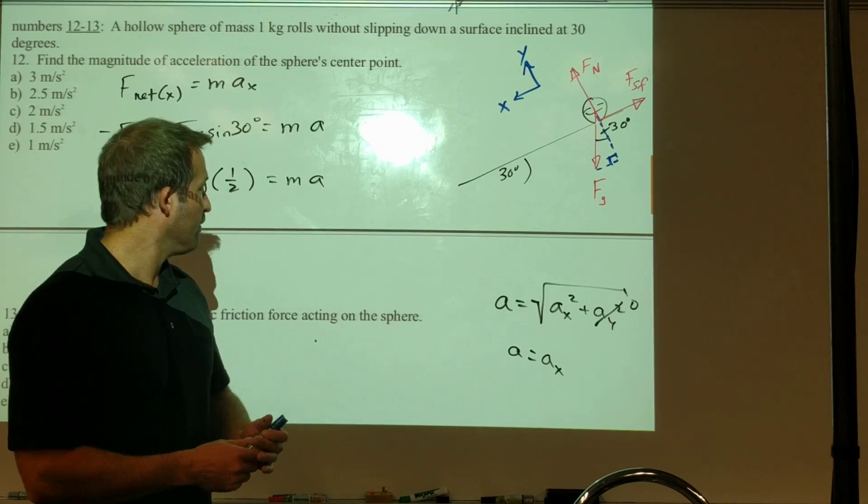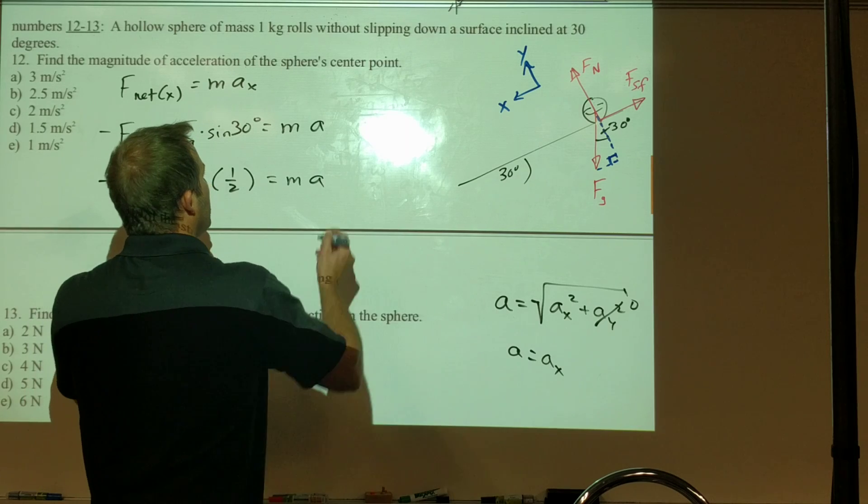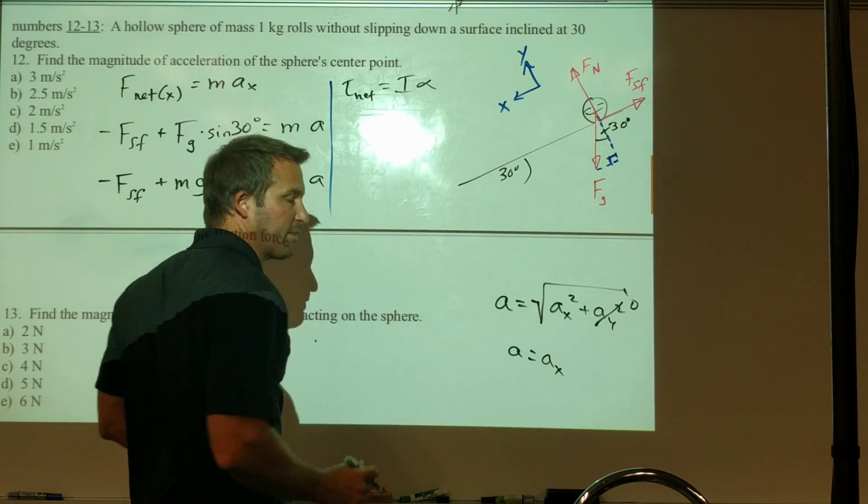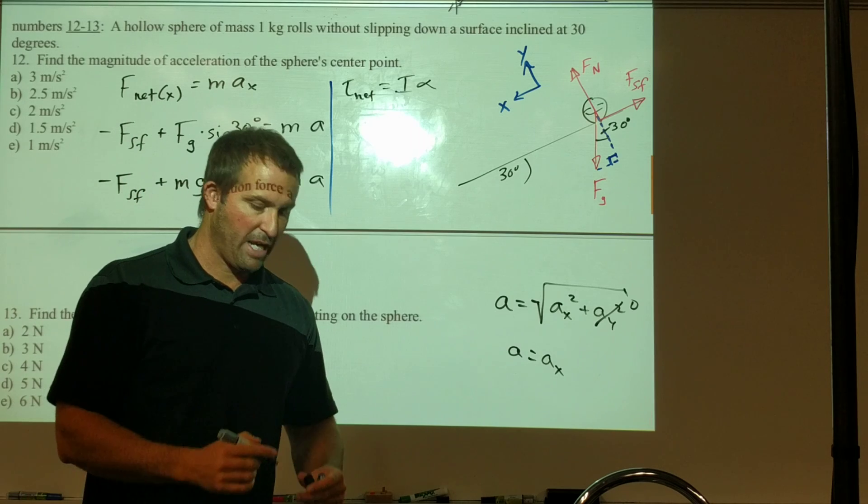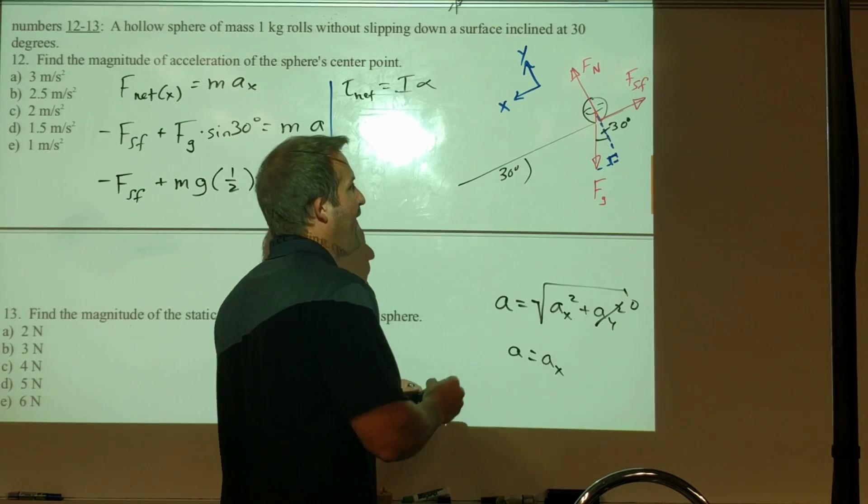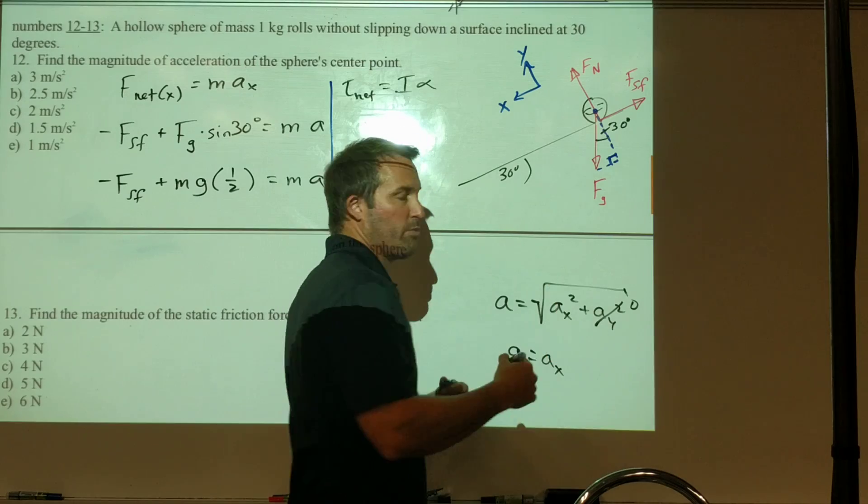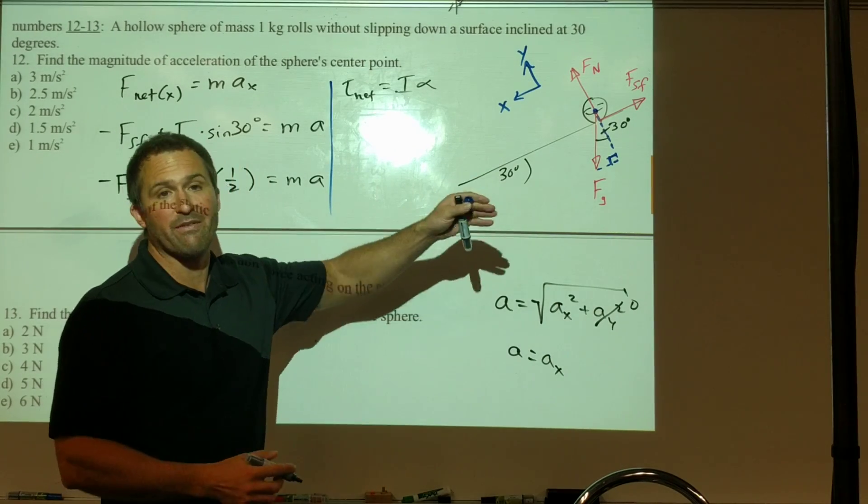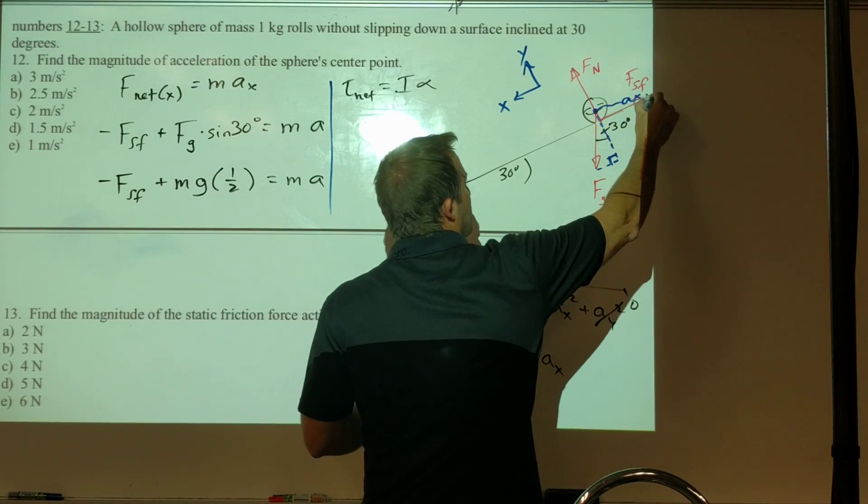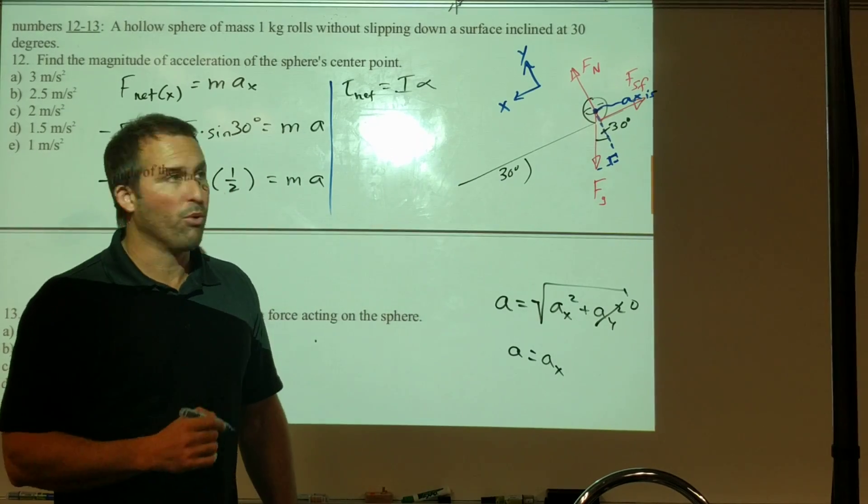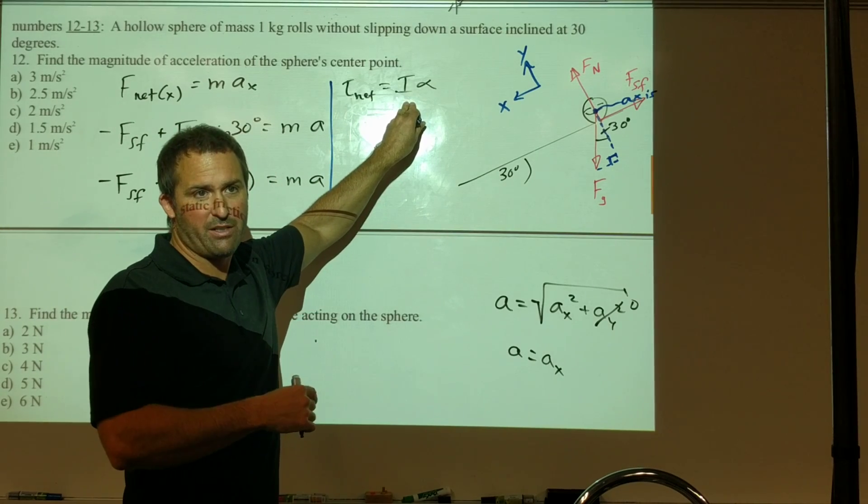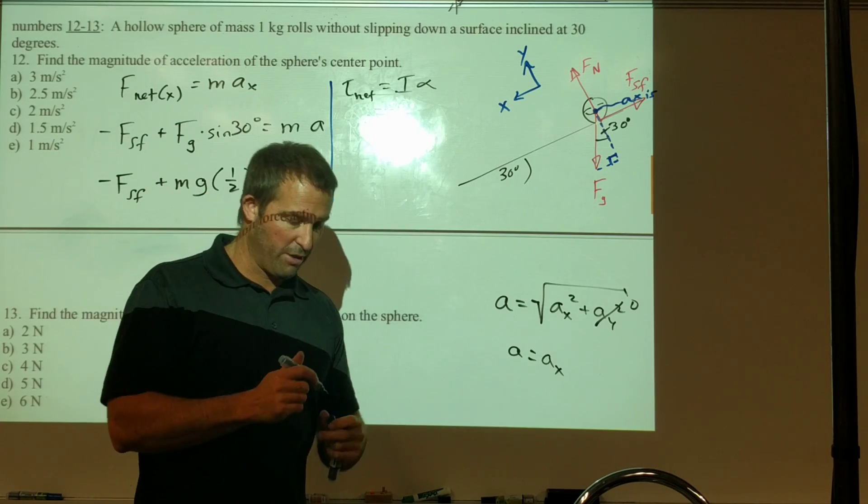The rotational second law looks like this: sum of all torques equals I times alpha. We add up all the torques and relate that to rotational acceleration. In this example we need to choose our axis point. My suggestion, certainly if an object is rotating about some point, is to use that as your axis. I'm going to choose that center point of the object. We're going to calculate our torques about that point, and our rotational inertia is going to be about the sphere center. That makes both of those easier for us with that choice of axis.